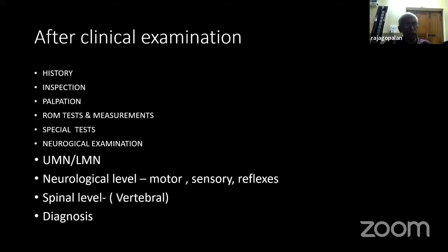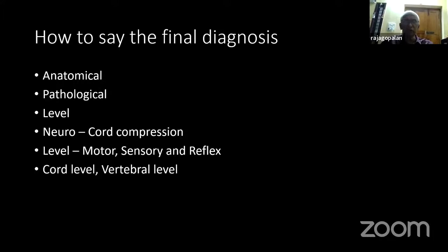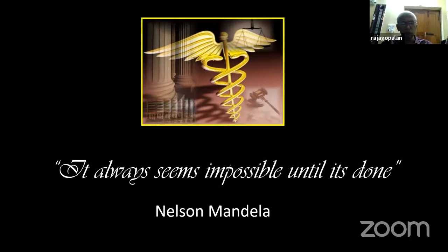Once you have taken a history, palpated, and completed your neurology, you need to formulate a diagnosis. The first important thing: know the level — is it upper motor neuron or lower motor neuron? What is the motor level, sensory level, reflexes level? The highest level is the neurological one. The spinal level will be different because the spinal cord ends at L1. When you give the diagnosis, start with, for example: a traumatic fracture at L1 with paraplegia. Then specify the anatomy, pathology — cord compression — and the level: what is the cord level, what is the motor level, and what is the vertebral level. Once you say that, all questions asked of you — investigation, management, surgery — will not pose any difficulty.